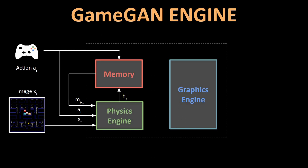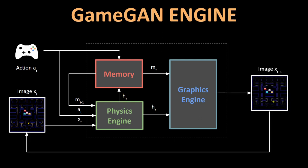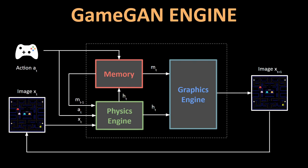Finally, both the updated memory and the game state are fed into the graphics engine to render the next image of the game, and then the loop continues. This way, the entire game can be rendered and played by neural networks without hand coding any of the game elements.